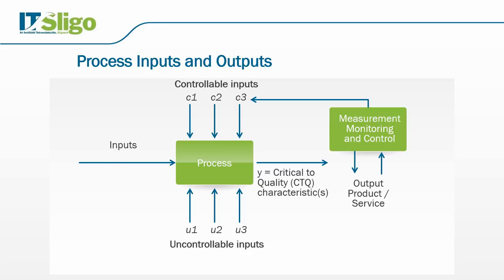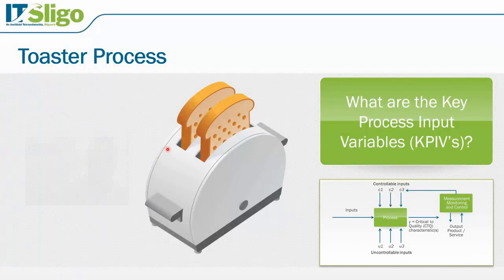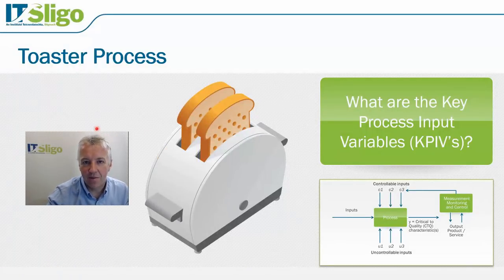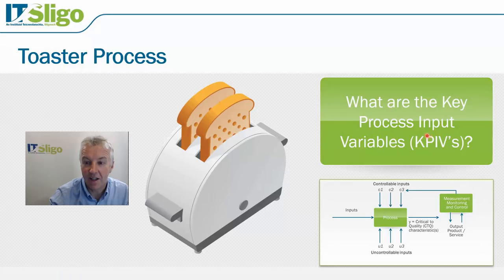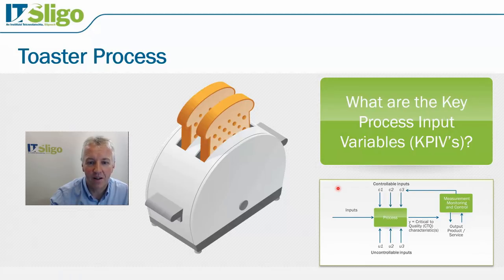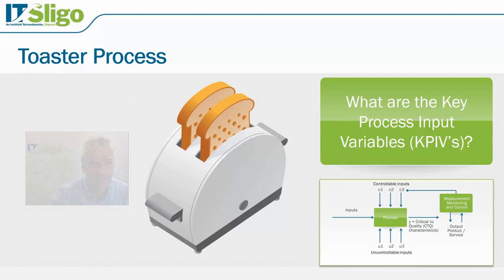Let's take an example that we're all familiar with — let's say we're making toast. Another key term in Six Sigma is KPIVs — the key process input variables. Using our input-output analysis from an earlier slide, we can start mapping this toaster process: we'll see what the inputs are and what the output is.